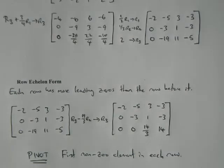And that term is pivot, and the pivot is the first non-zero element in each row. Okay, so the pivot of the top row is negative 2, the pivot of the second row is negative 3, and the pivot of the third row is 14 over 3. And once you have a matrix in row echelon form, it's fairly easy to solve your system of simultaneous equations.